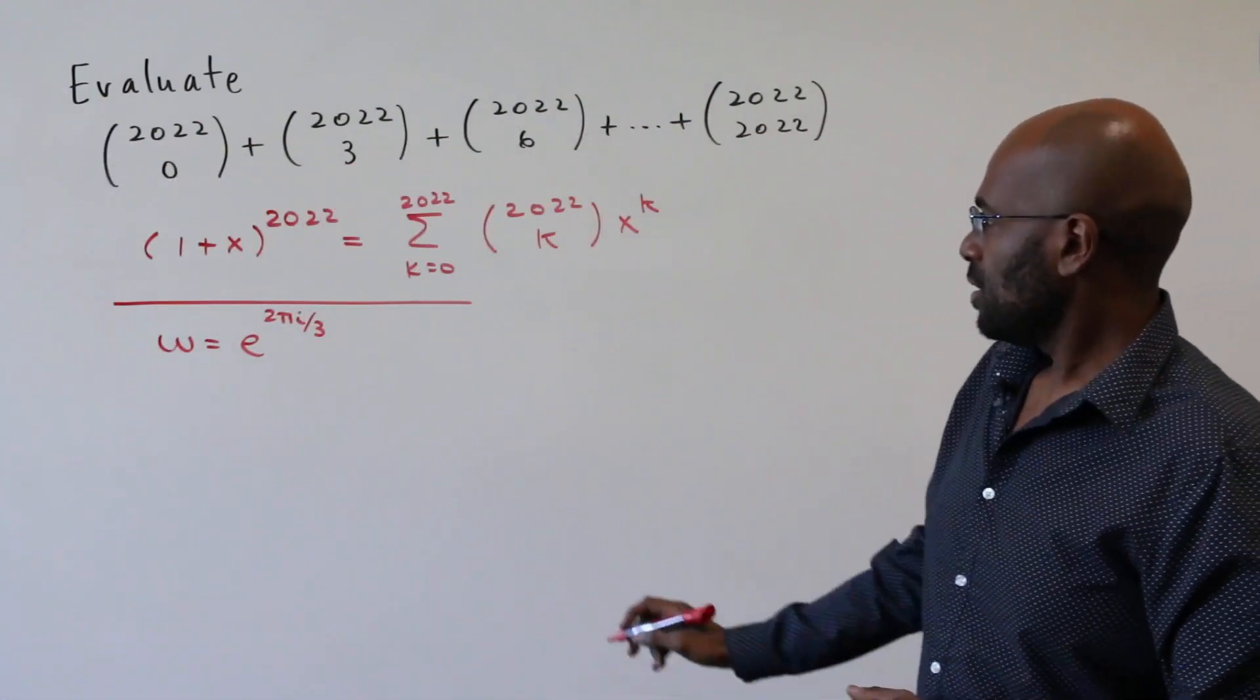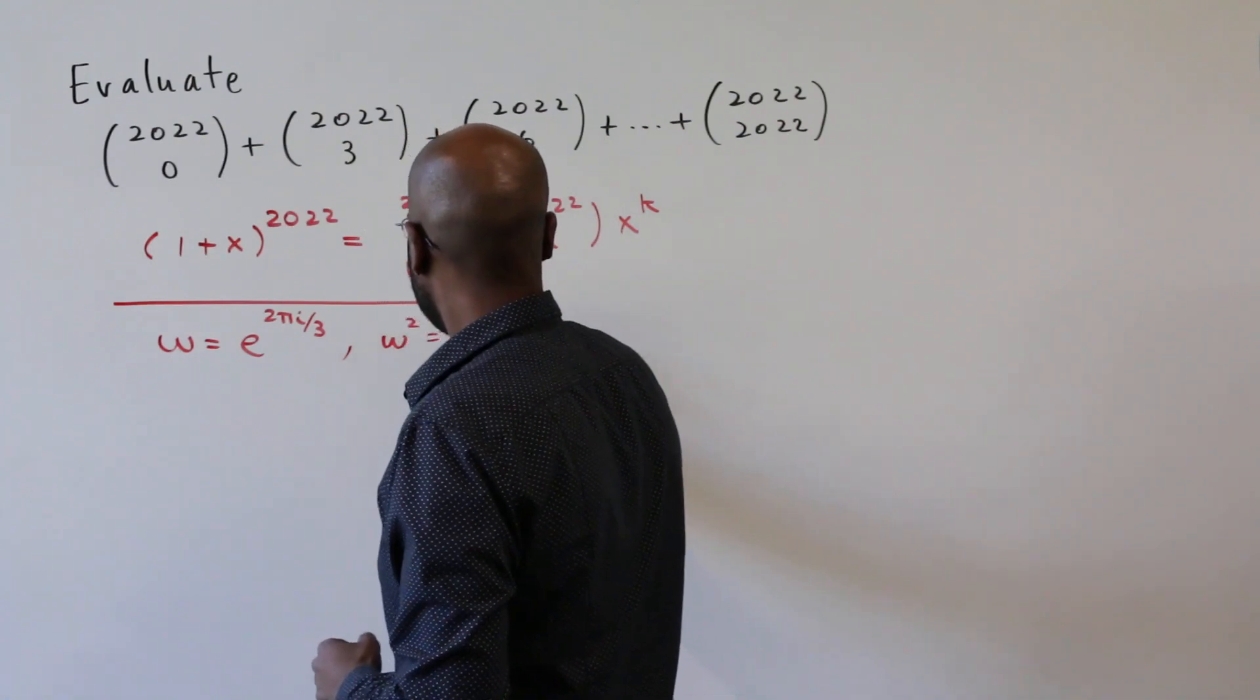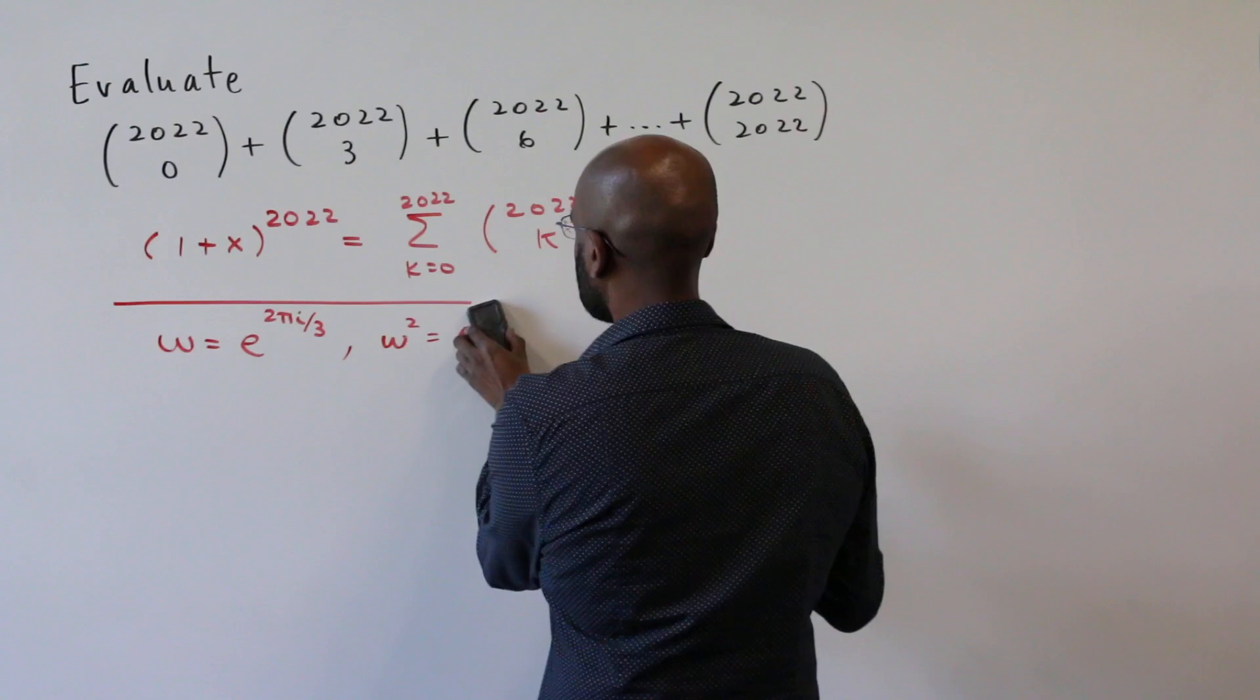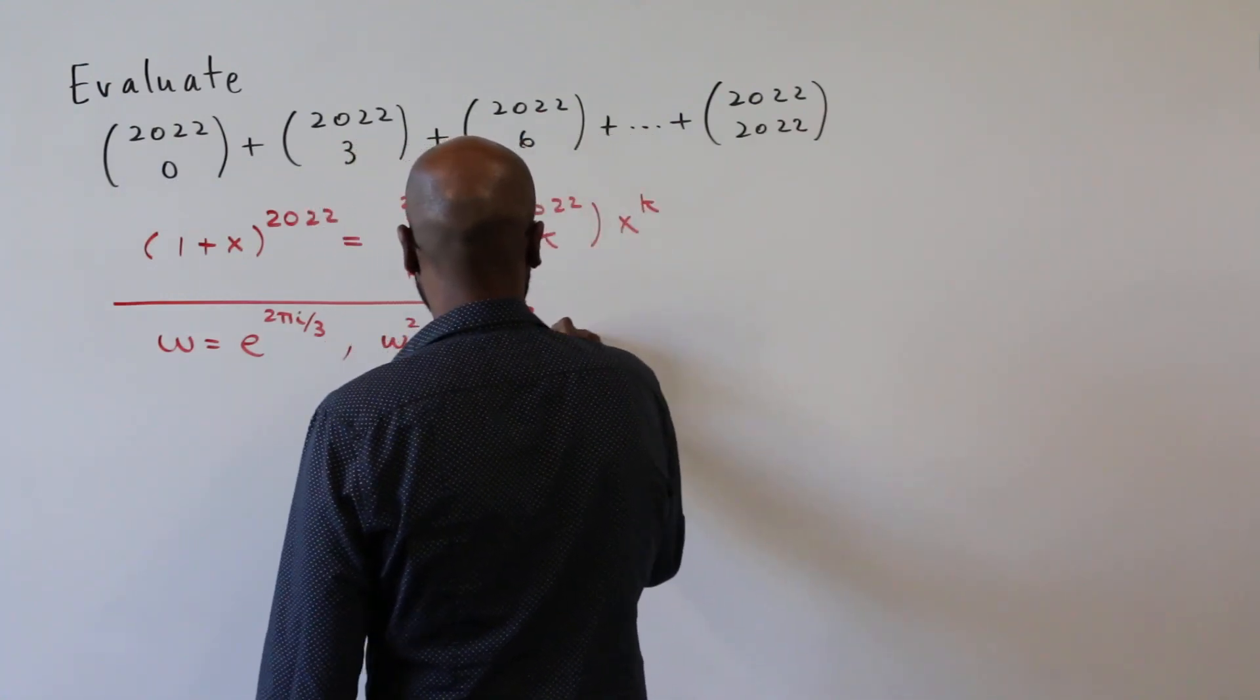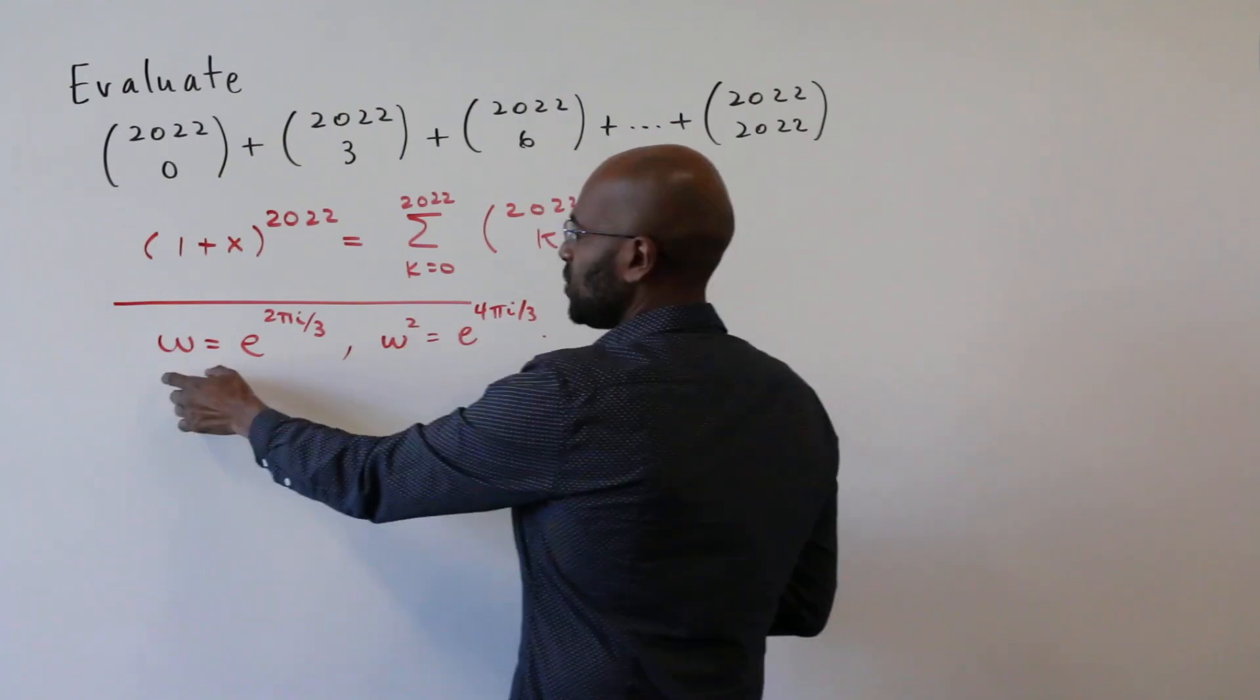All right, so if we look at this number, if we square it, we get e to the four pi i over three. And there are some things we can notice about these numbers. These two numbers are both roots of the polynomial x cubed minus one.